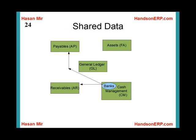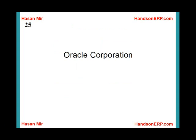In addition to the flow of information between modules, data is also shared among modules to prevent duplication. For example, if you have created a bank in Cash Management, you don't have to create another bank record in Accounts Payable and Receivable — the same information is shared and stored in only one place, reducing redundancy.